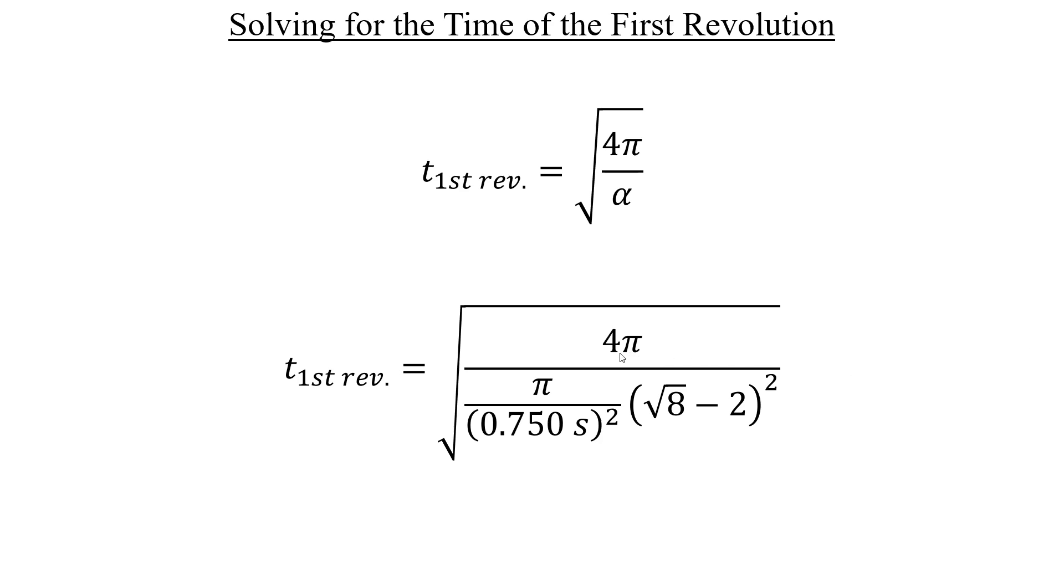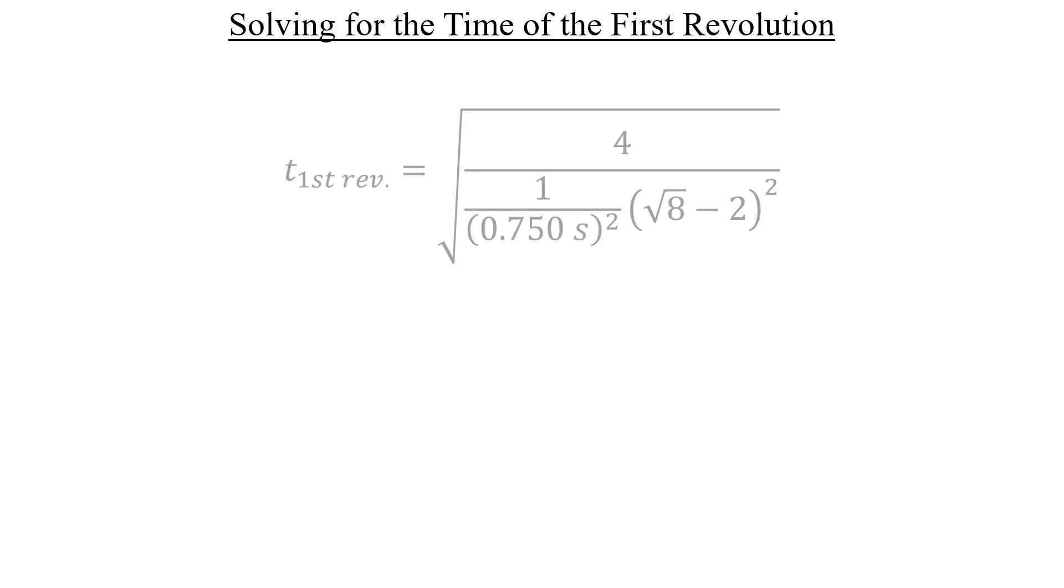There's a pi in the numerator and a pi in the numerator of the denominator. So it's perfectly legal to cancel those out. Next, let's slide the square of the square root of eight minus two into the numerator spot of the denominator, where the one is, like this.